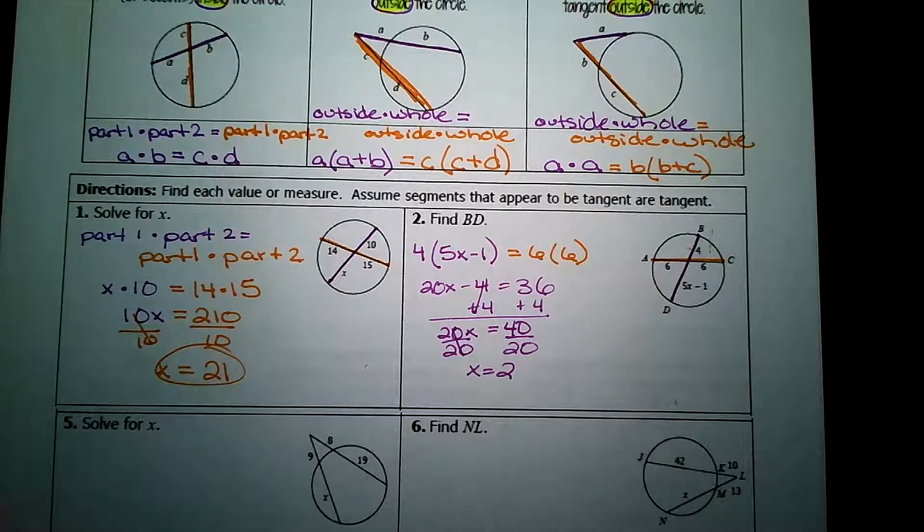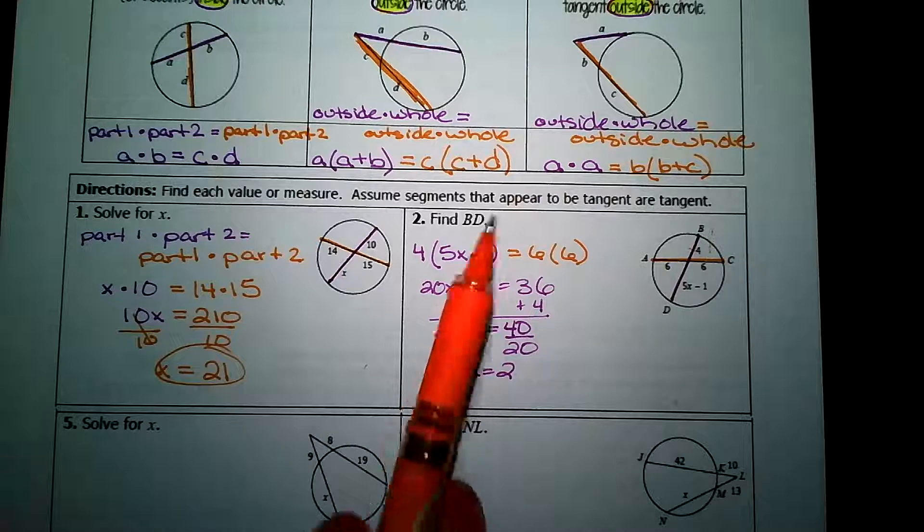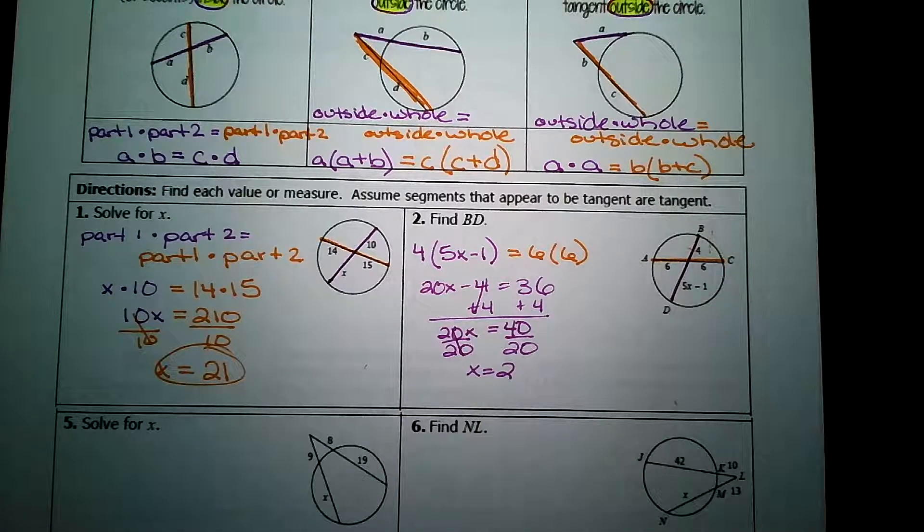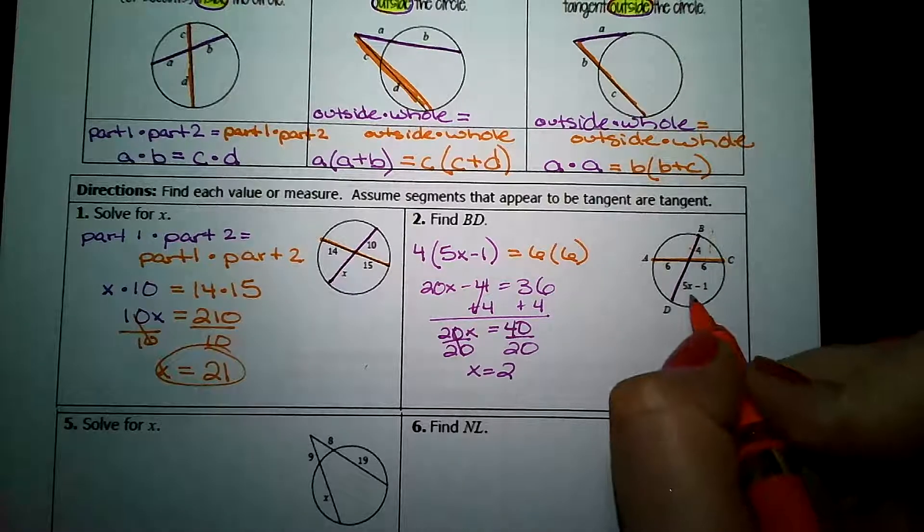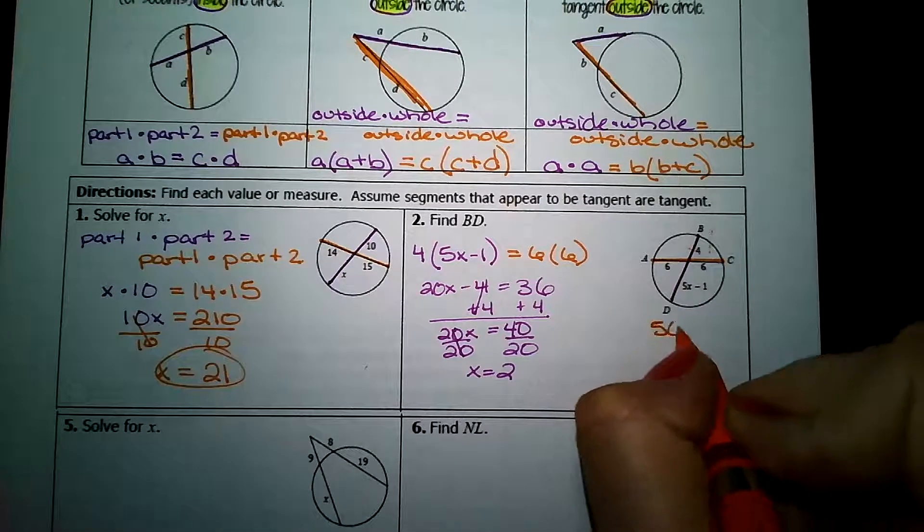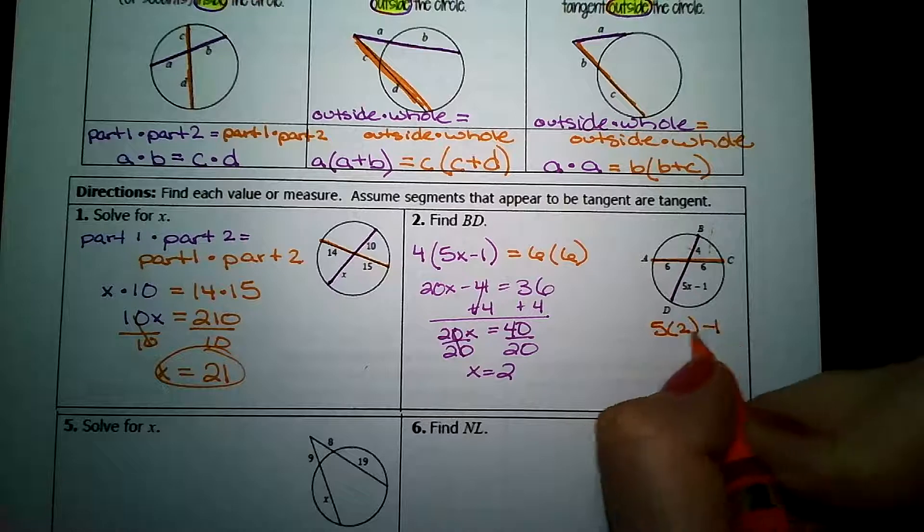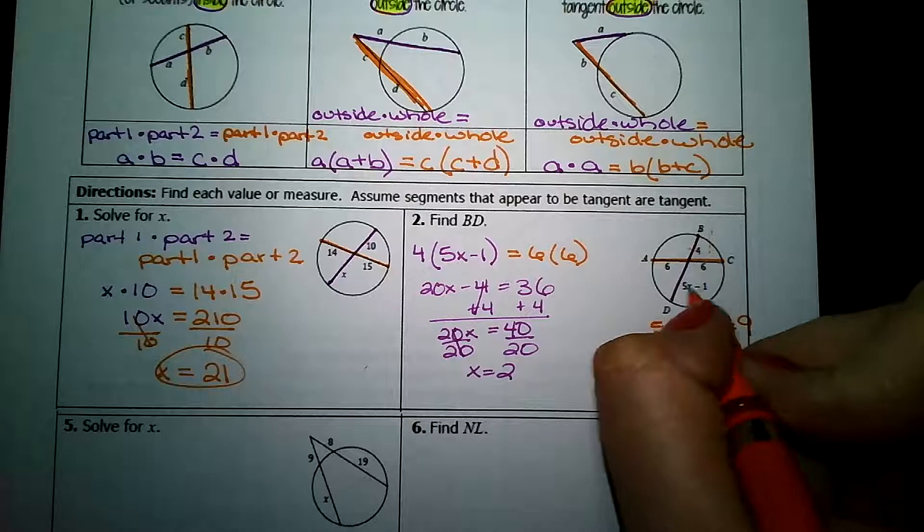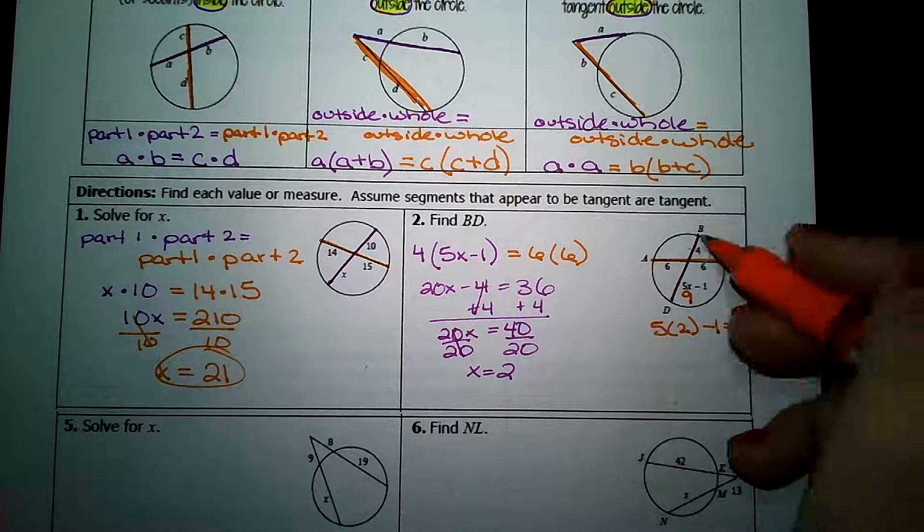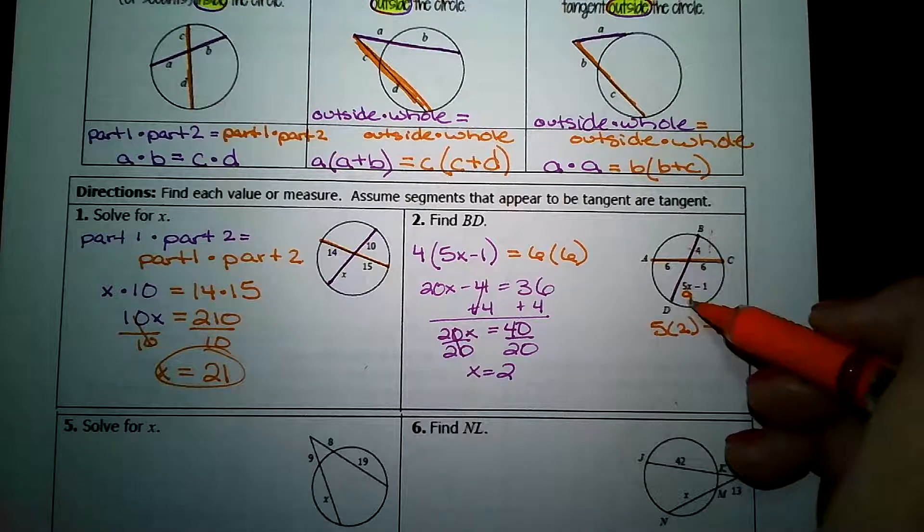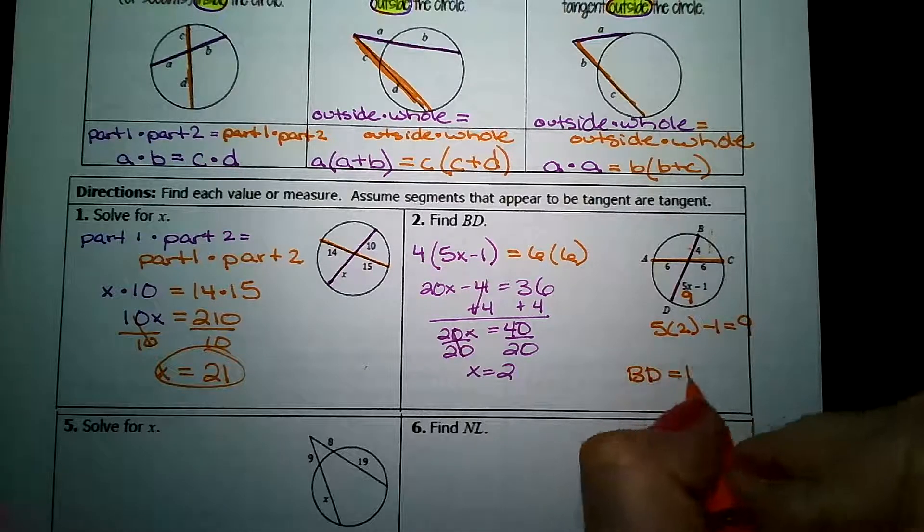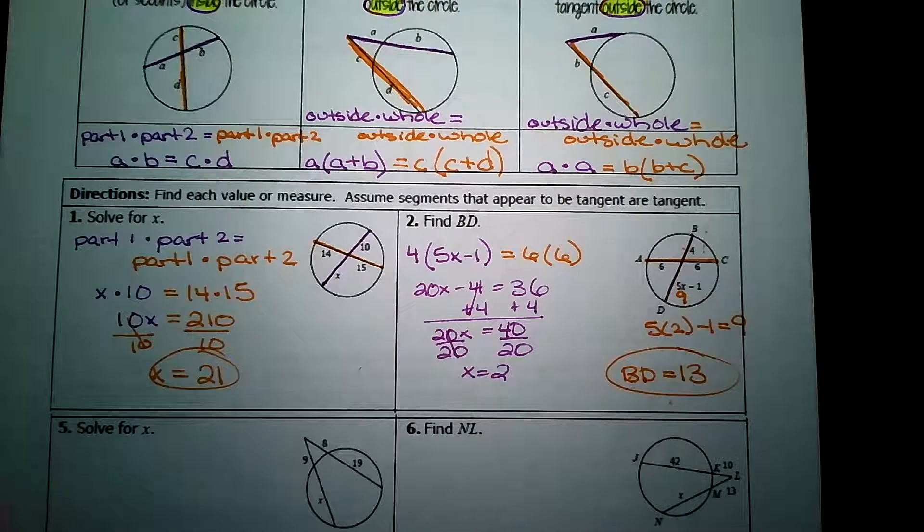Okay, I got x equals 2. However, that's not what the question is asking me. This question is asking me to solve for b all the way to d. So I need to take my value of x and plug it back in. 5 times 2 minus 1. 5 times 2 is 10, and 10 minus 1 is 9. So this part of the chord is 9. Well, from b all the way to d is 9 and 4. So 9 plus 4 is 13. Just make sure we're reading the question.